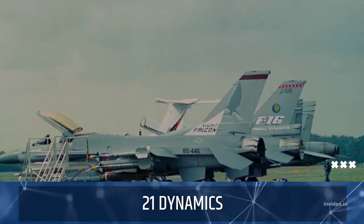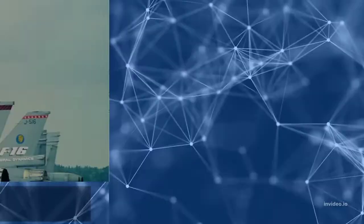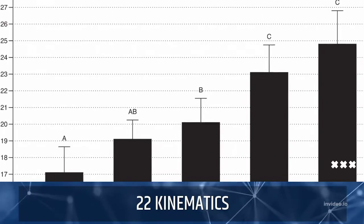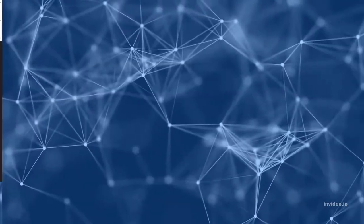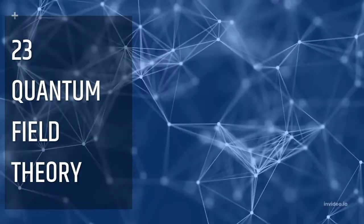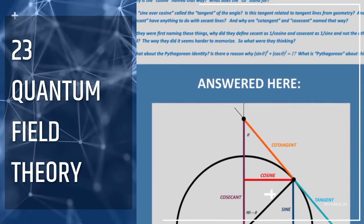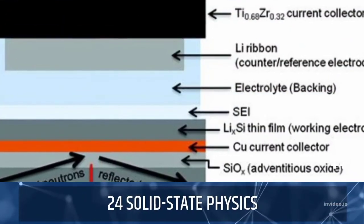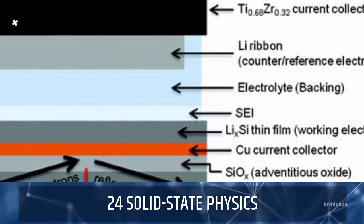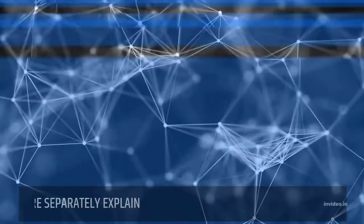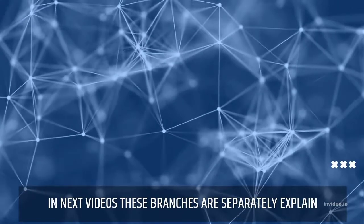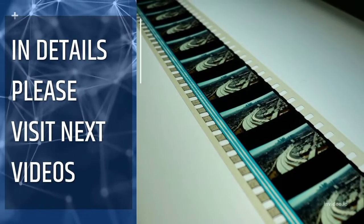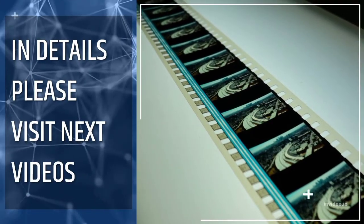Twenty-one: dynamics. Twenty-two: kinematics. Twenty-three: quantum field theory. Twenty-four: solid state physics. In the next videos, these branches are separately explained in detail. Please visit the next videos.